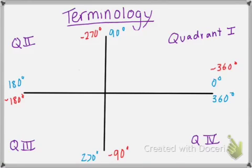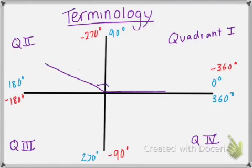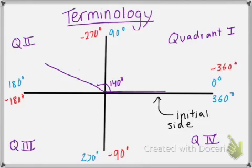Now say you are given an angle — maybe one that looks like this. Let's say that we call that 140 degrees. So this side right here is called your initial side, and wherever your angle falls, this is called your terminal side. Terminal just meaning ending.